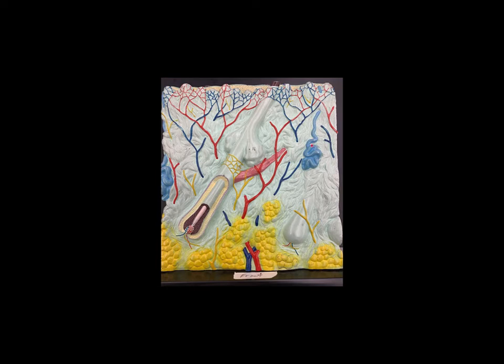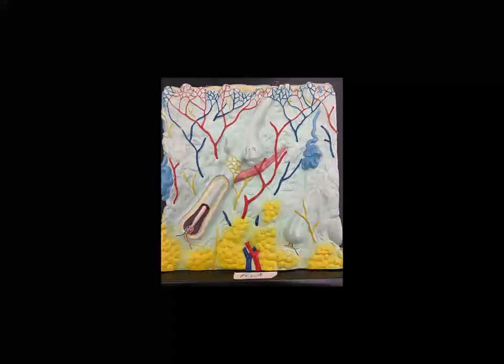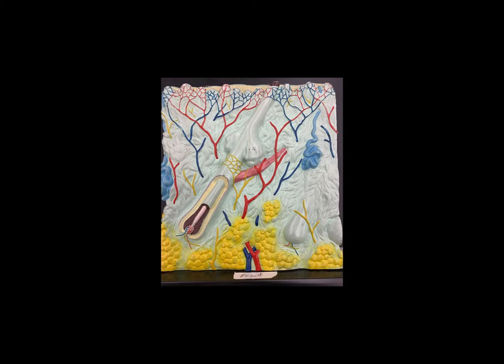Over here we can see a sweat gland. I always tell my students to think of sweat glands as kind of like a very long garden hose that someone has wadded up at one end — so it's all coiled and kinked up deep in the dermis. But this part kind of straightens out and extends onto the surface of the skin. This whole thing is a sweat gland.